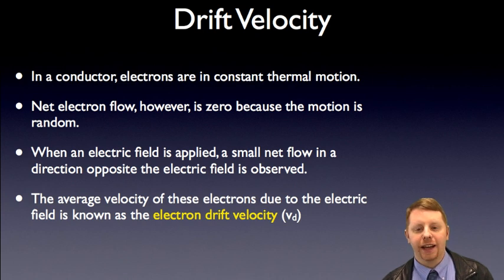In a conductor, electrons are in constant thermal motion, and they're moving quickly, on the order of a million meters per second. The net electron flow, however, is zero because it's all in random directions.